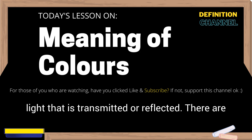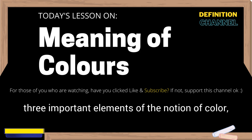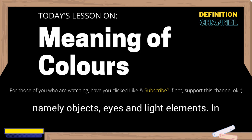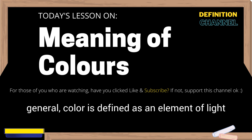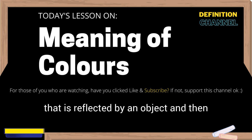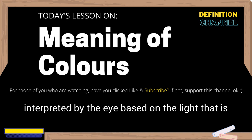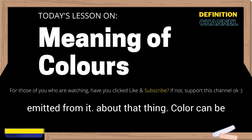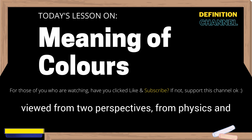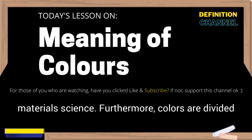There are three important elements of the notion of color, namely objects, eyes, and light elements. In general, color is defined as an element of light that is reflected by an object and then interpreted by the eye based on the light that is emitted from it. Color can be viewed from two perspectives: from physics and materials science.